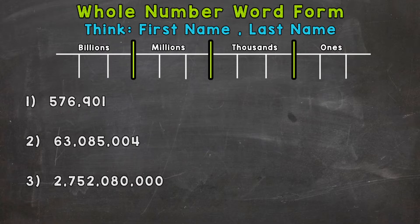So let's jump into number one where we have this number here. And I'm going to write it in our place value chart to help us see how we say these numbers properly and therefore write them out and have the correct word form.